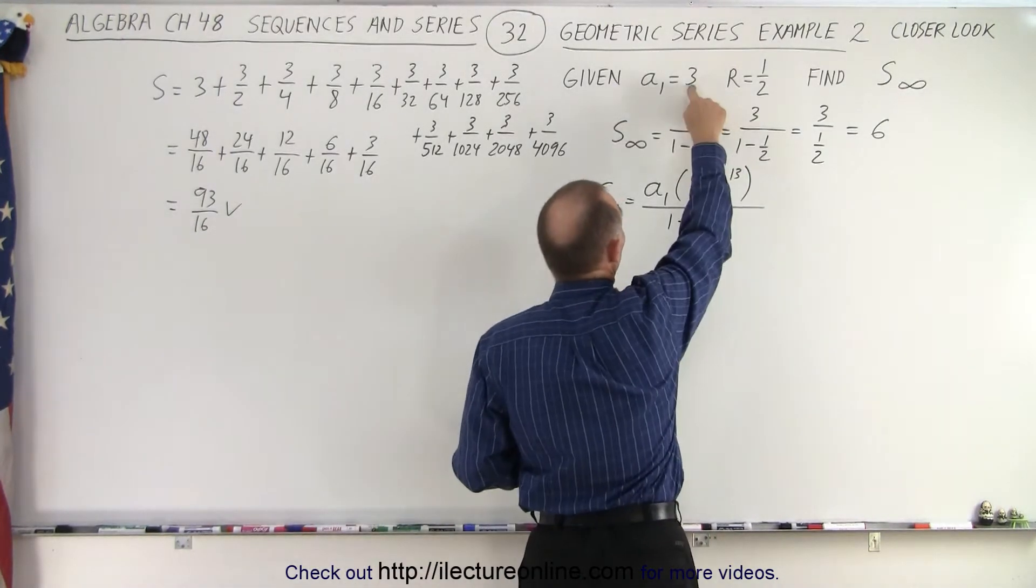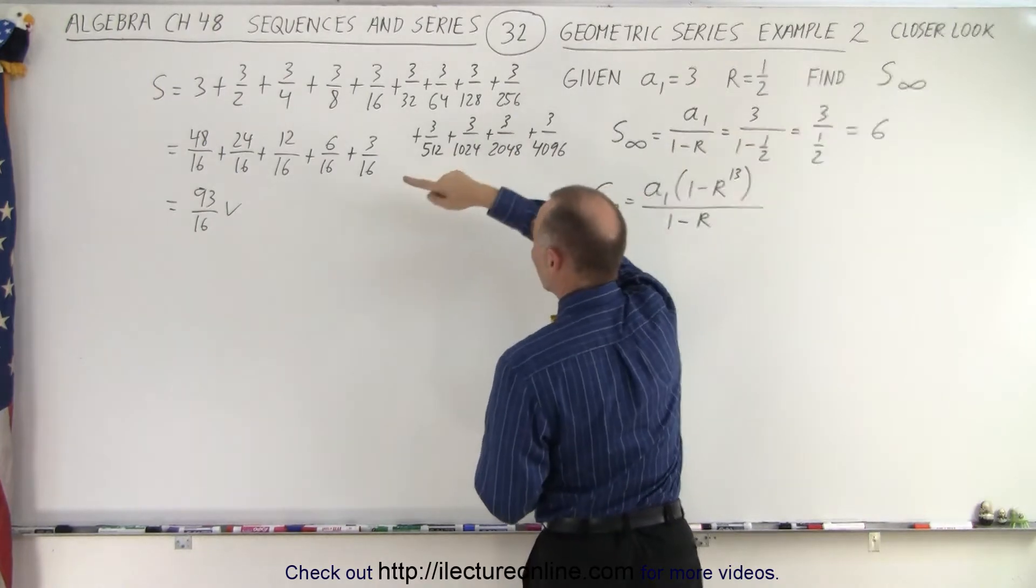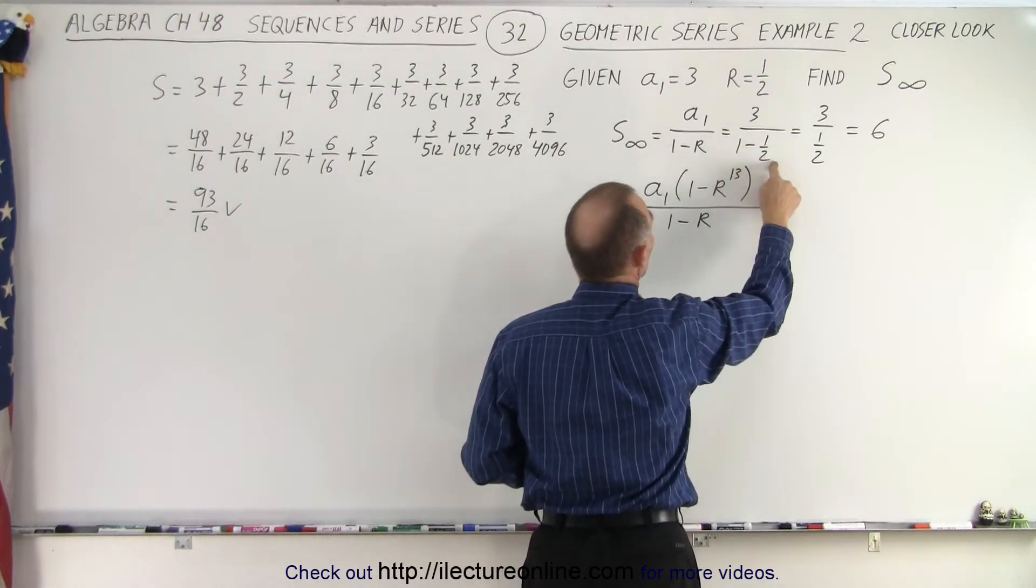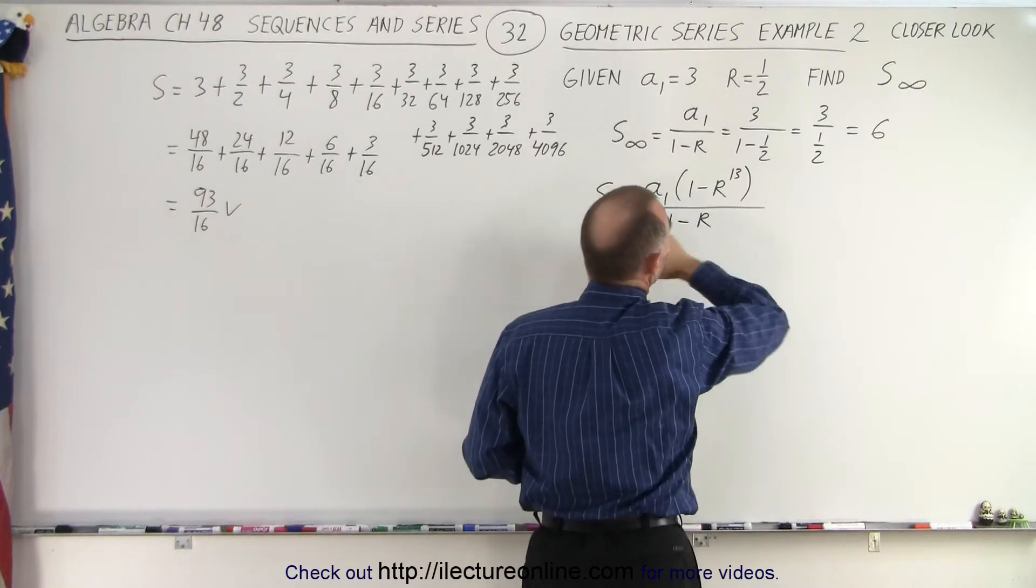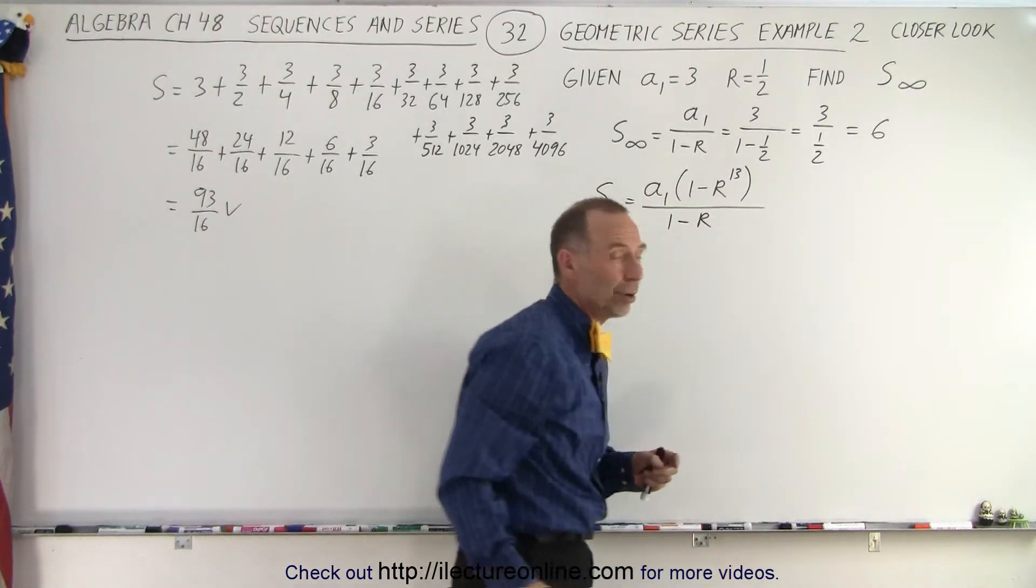So we plugged in the numbers. Our first term was 3. See that in there? Divide by 1 minus the common ratio which is 1 half. And we turned out we got a number equal to 6.